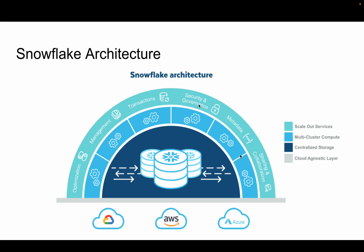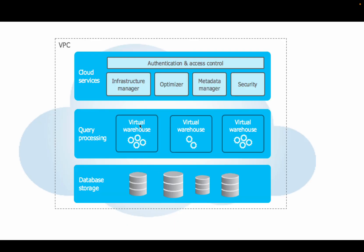Snowflake has a hybrid architecture that uses both shared-nothing and shared-disk architectures. Shared-nothing means each virtual warehouse uses its own separate copy of the dataset. Shared-disk means there is a single metadata layer used by all compute resources. At the bottom we have the database storage layer where the actual data resides in micro partitions, the smallest unit of storage in Snowflake.